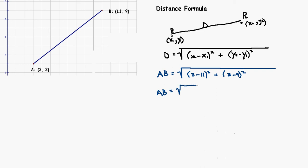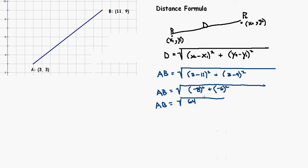So AB is equal to the square root. If I go 3 minus 11, that's going to be negative 8, so negative 8 squared. And 3 minus 9 is negative 6 squared. Now negative 8 times negative 8 is positive 64, and negative 6 times negative 6 is positive 36. So now we have AB is equal to the square root of 64 plus 36. I simply add those two numbers together: AB is equal to the square root of 100.